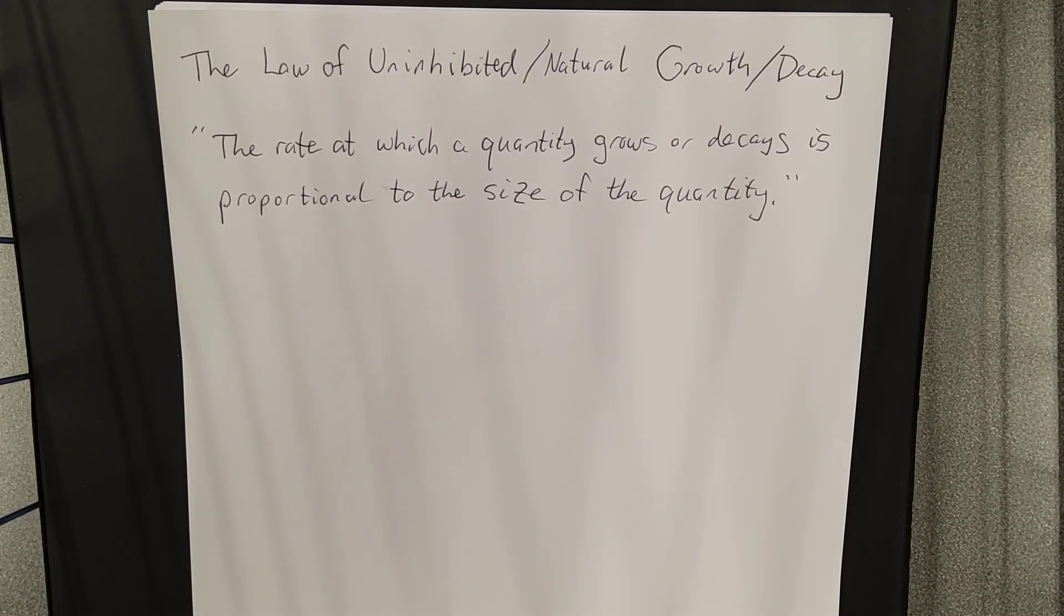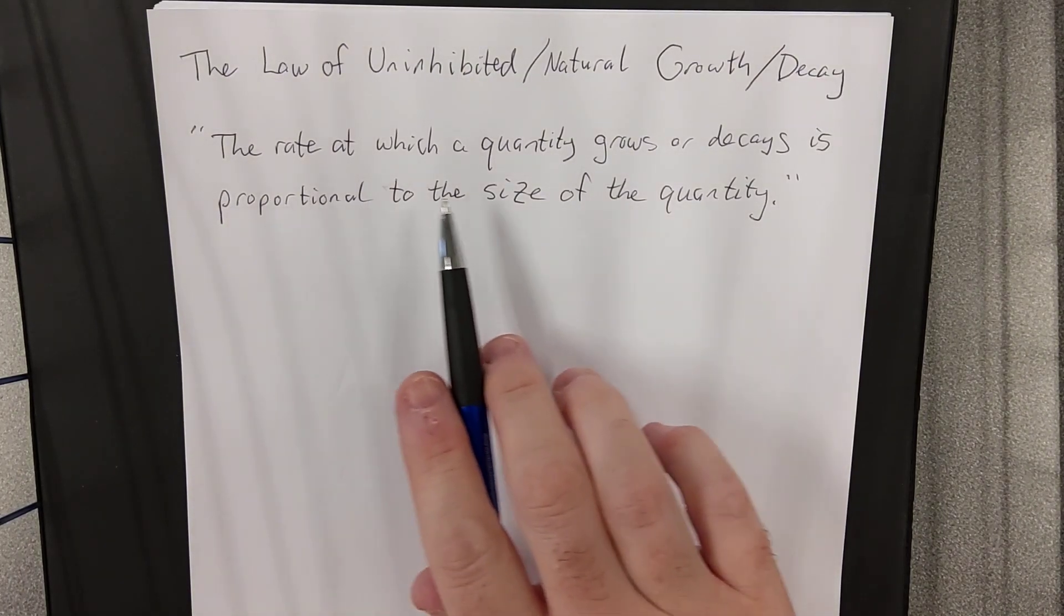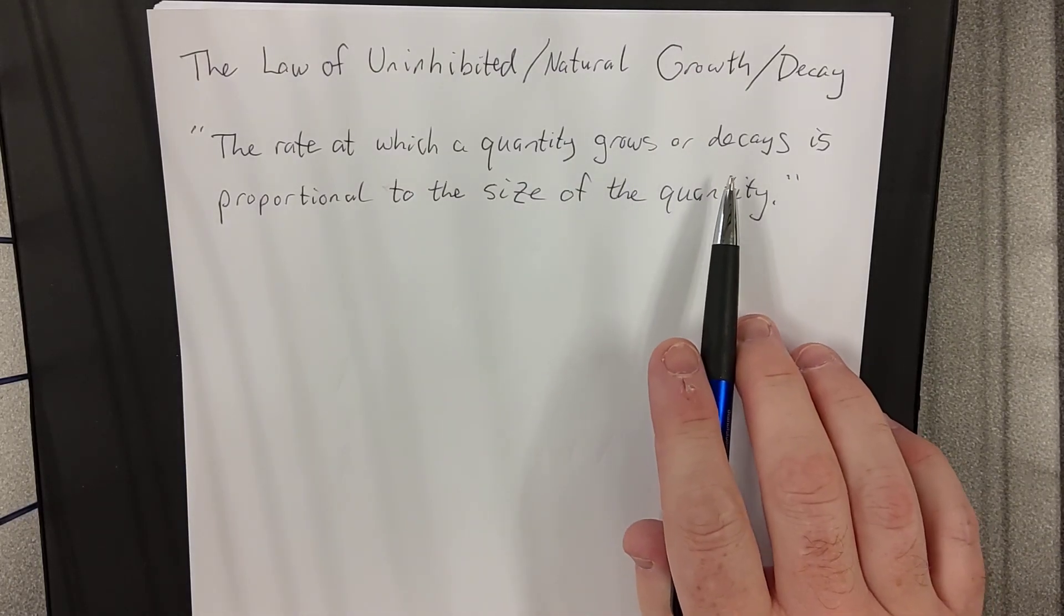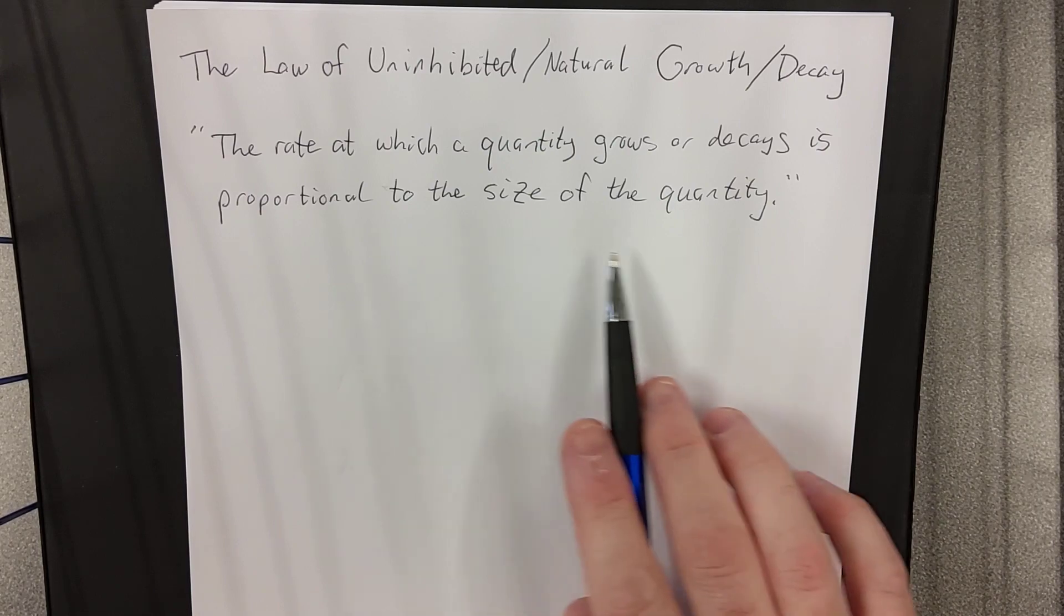To wrap up the college algebra portion of our course, we are going to move on into the law of uninhibited or the law of natural growth or decay. The law of natural growth and decay states the following: The rate at which a quantity grows or decays, growing if it's getting bigger, decaying if it's getting smaller, is proportional to the size of the quantity.